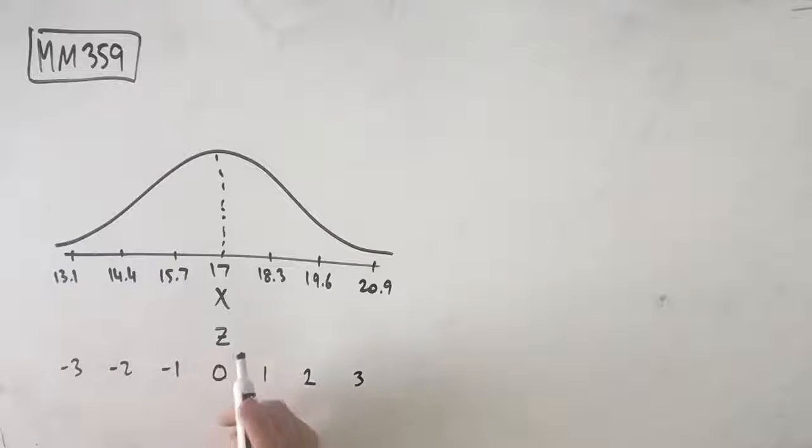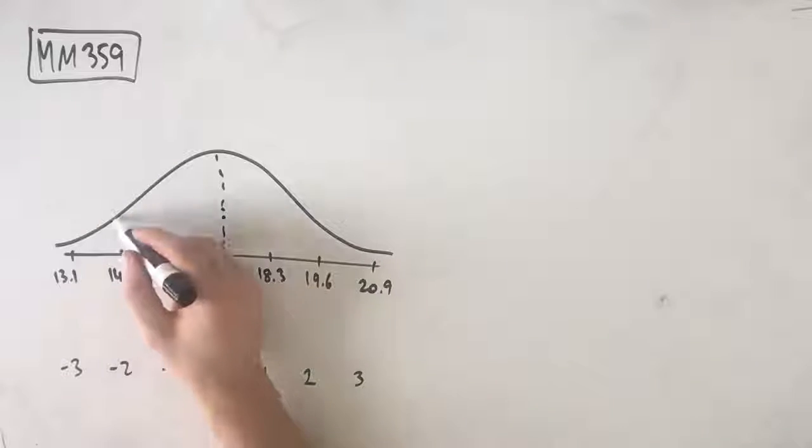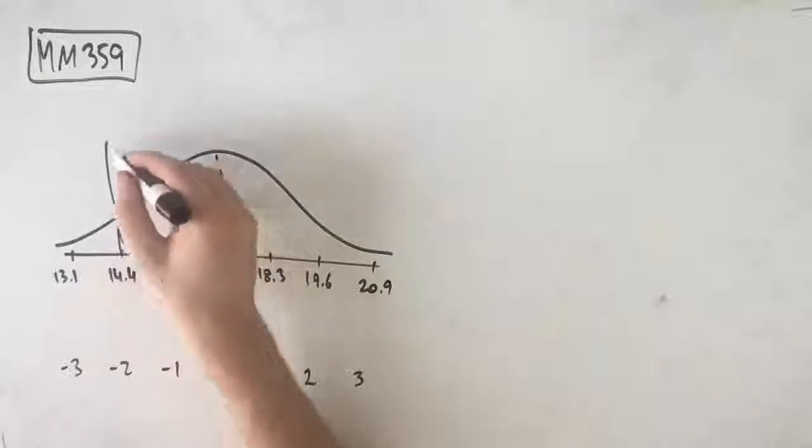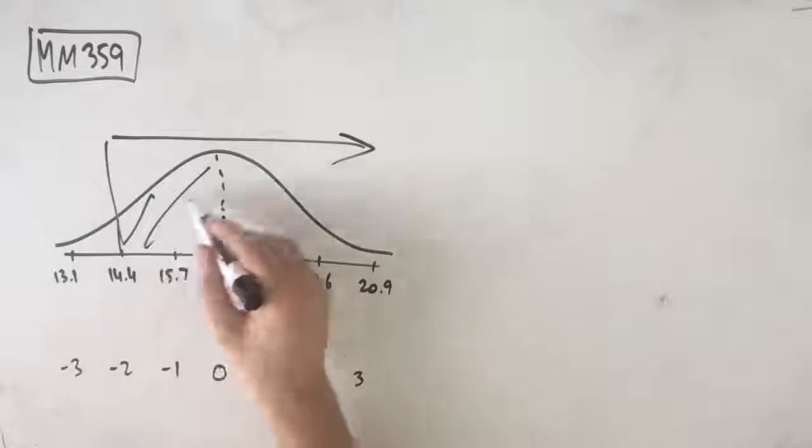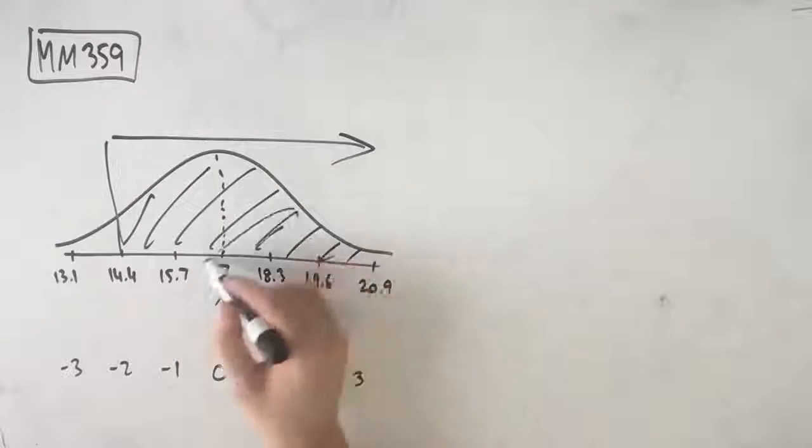So from here we know that we're looking for the probability that x is greater than 14.4. So 14.4 is just here and we're looking for the probability that it's greater than that. So all of this area here, the probability there.